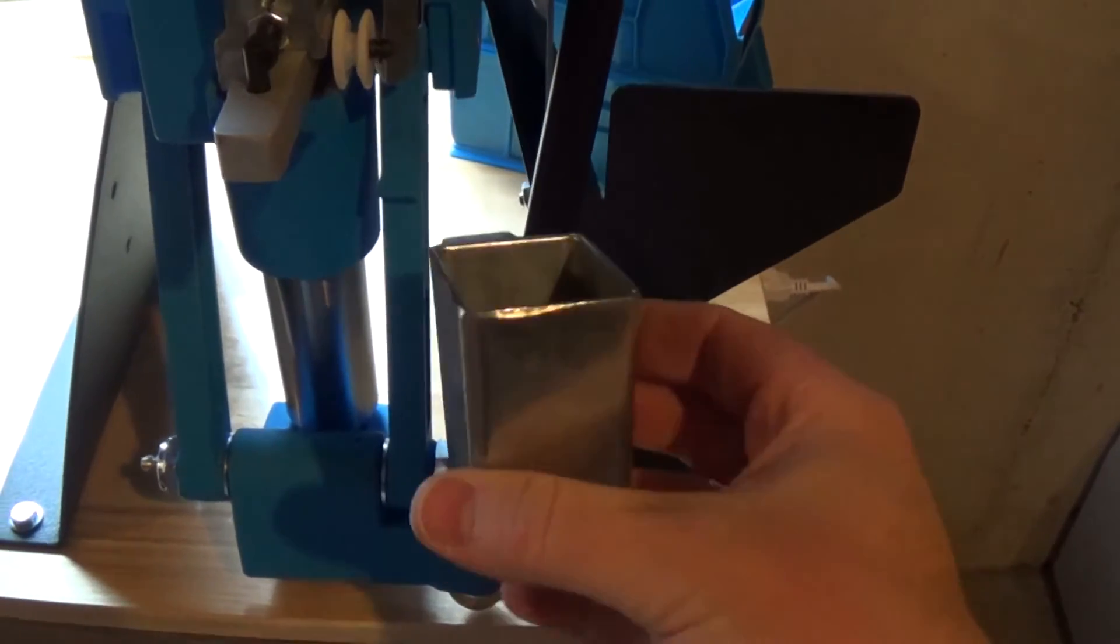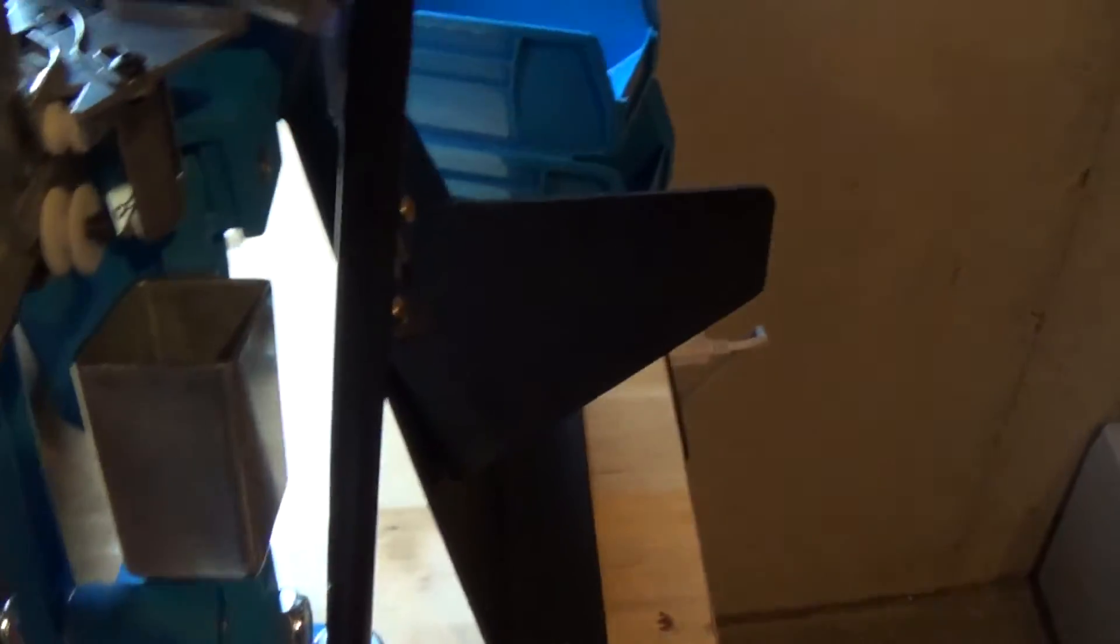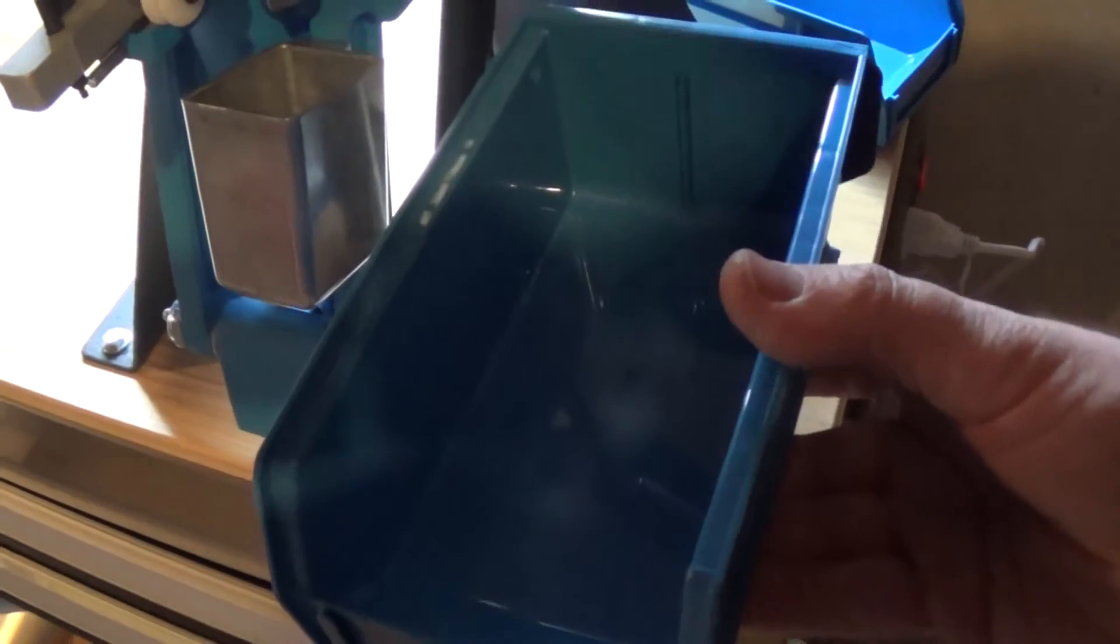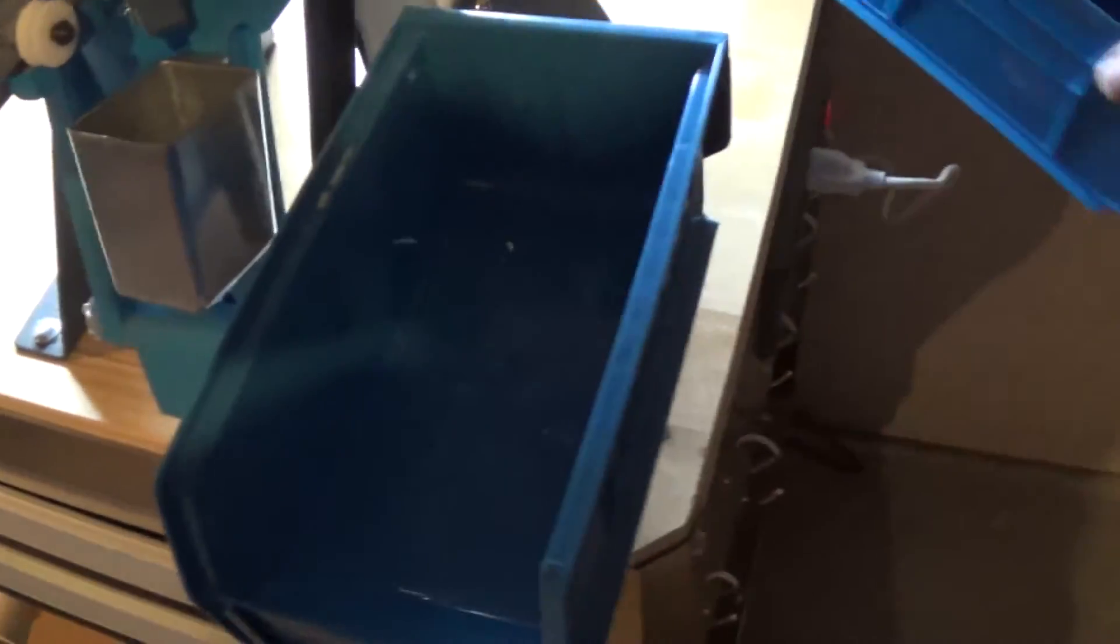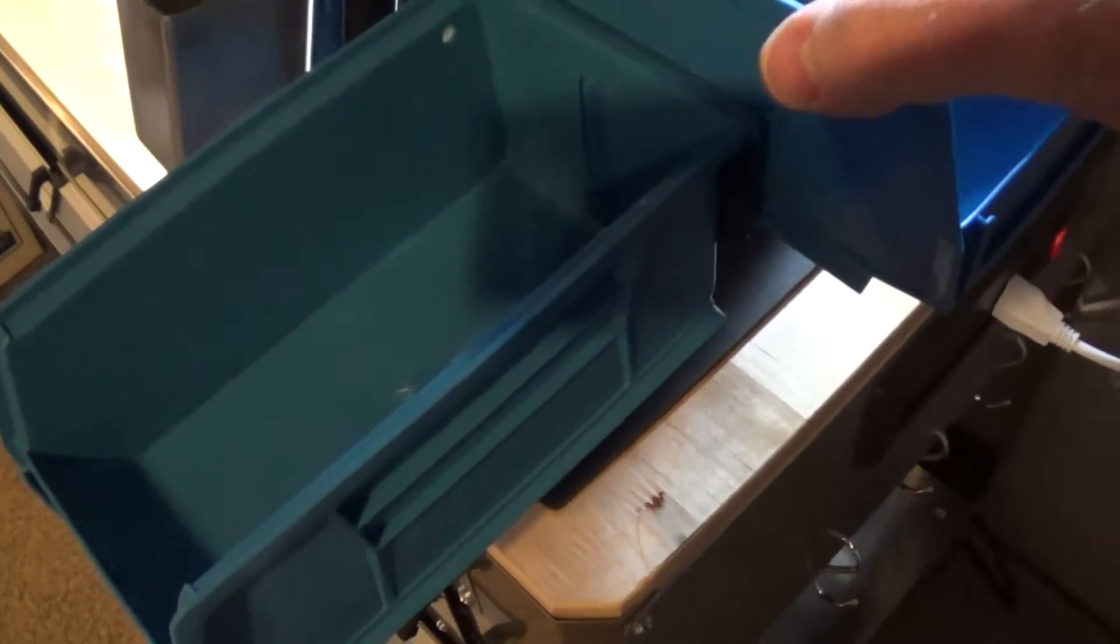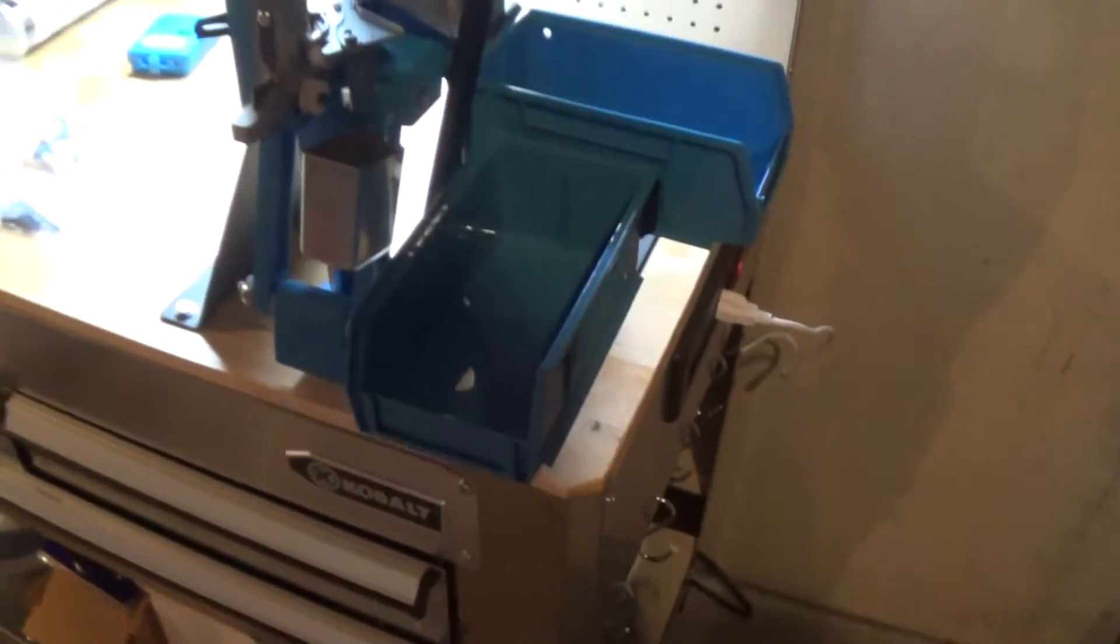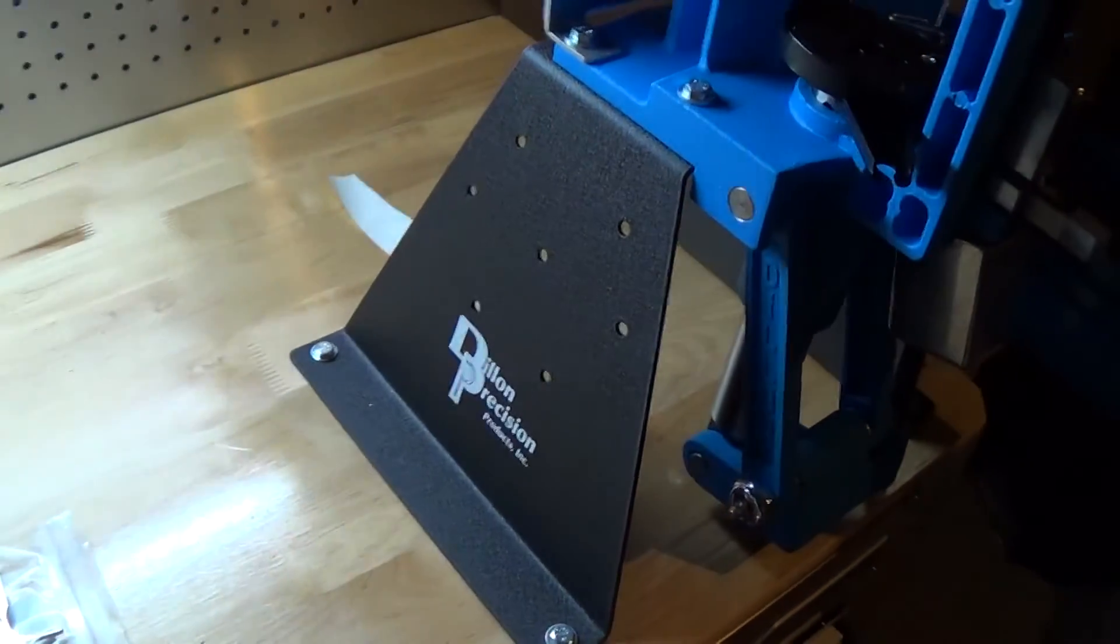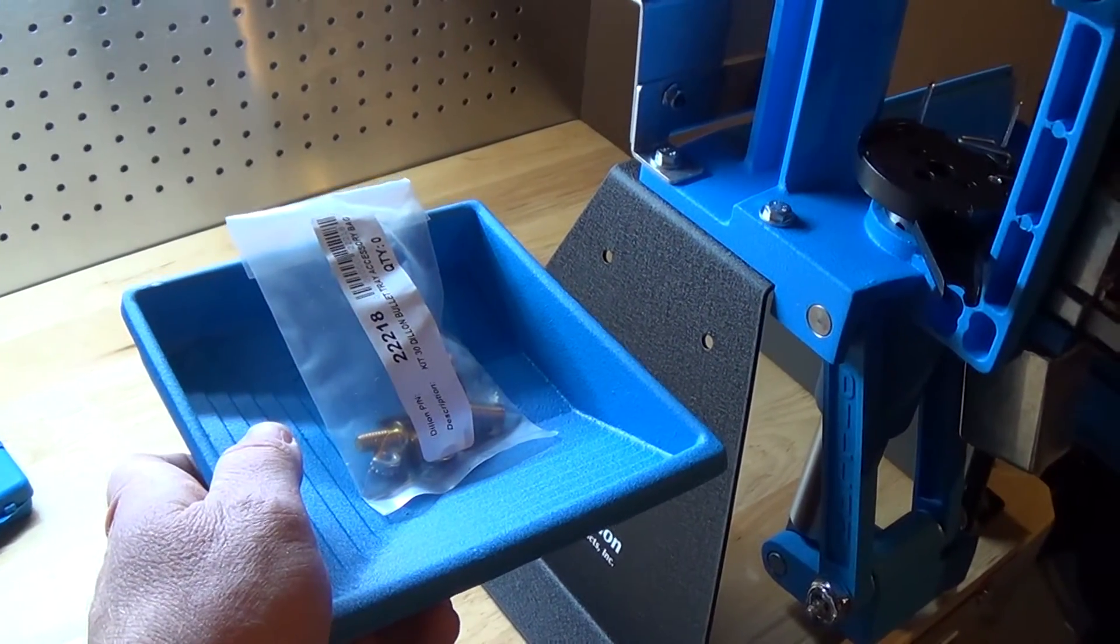Alright, I can install the old primer catch right there. And this bin will be for the cartridges, the empty cartridges. This will be for the finished ammo when it dispenses. So we are getting there. Next up I am going to go ahead and install the optional bullet tray. So I am going to go ahead and get that installed.